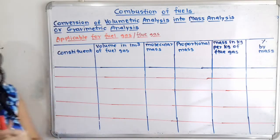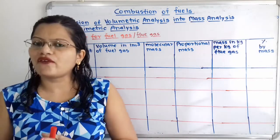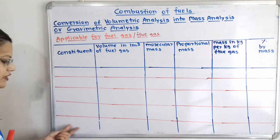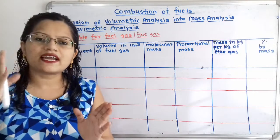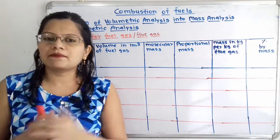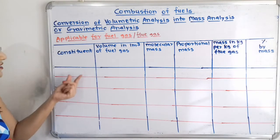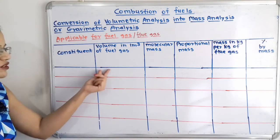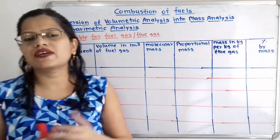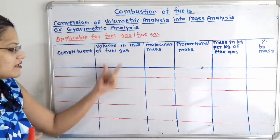In the first column we have to write the constituents. Fuel gas or flue gas is a combination of various gases such as carbon dioxide, carbon monoxide, and nitrogen, so we write all the constituents. Volumetric composition is given — it may be given in percentage, that is, out of 100% of the total gas, what is the percentage of each constituent. We then convert this percentage by dividing by 100 and write it in the second column.